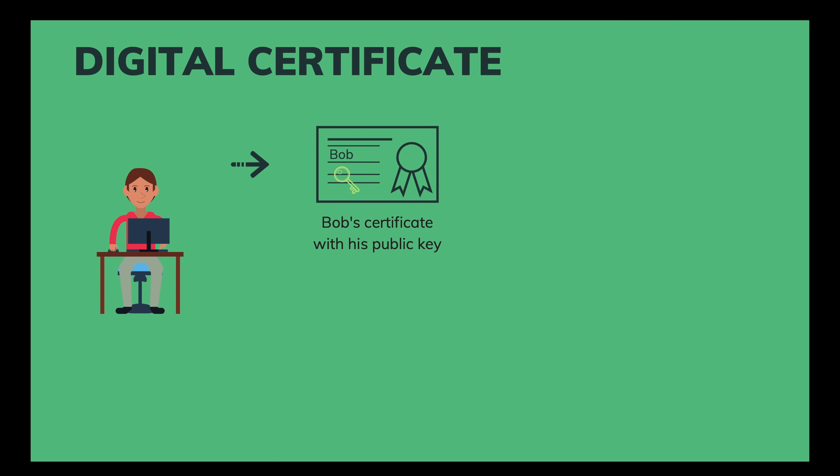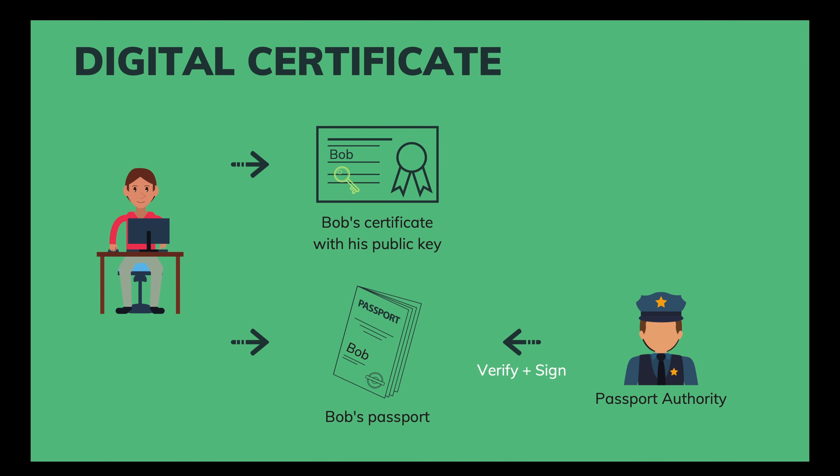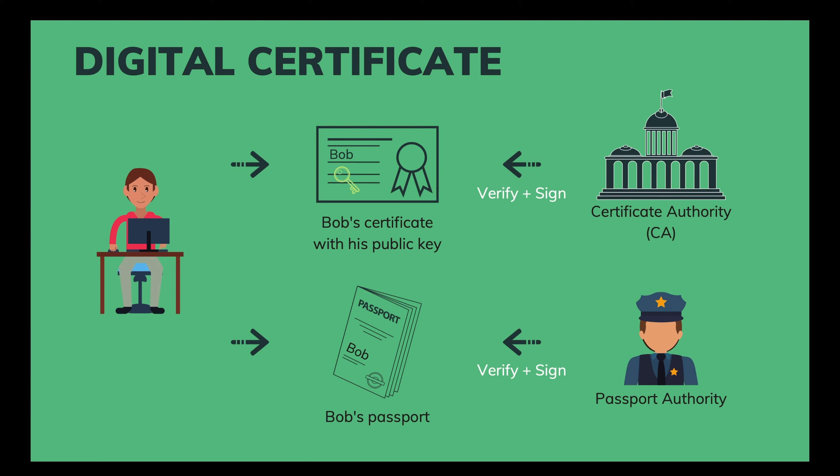And that's nothing else but a digital certificate. Bob puts his key inside his certificate, which has his name and other identity information on it. The certificate acts like a passport in the real world. But how do we know it's really Bob who owns that certificate? What stops Harry from making a fake certificate under Bob's name but with Harry's public key? Just like in the real world, the passport must be issued by a passport authority after identity verification. In the digital world, the certificate must be verified and signed by a certificate authority, which is a trusted third party that helps us prevent creation of fake digital certificates.